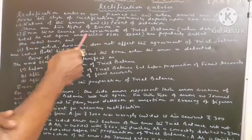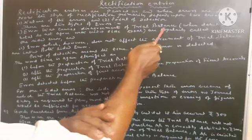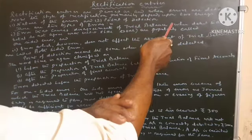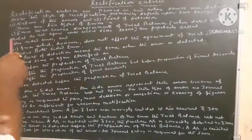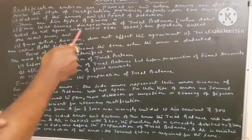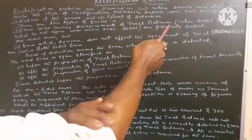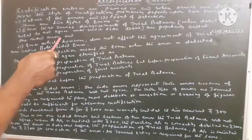Number 1, Errors that Causes Disagreement of Trial Balance. In bracket, when debit side total do not agree with credit side total and are popularly called one-sided errors.